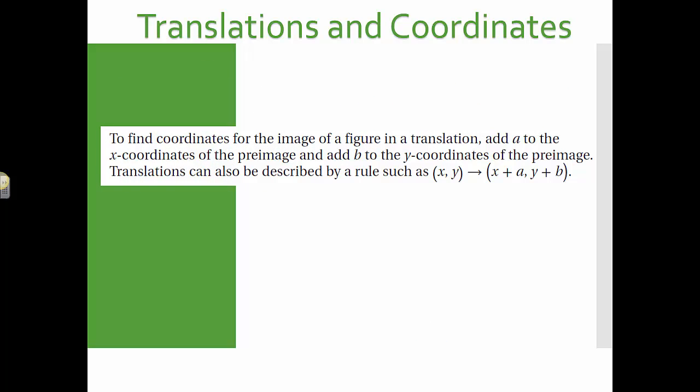The last thing we're going to do is translations in the coordinate plane. And we're going to use what we call a rule to do that. To find coordinates of an image of a figure in a translation, add A to the X coordinates of the image and add B to the Y coordinates of the image. And this will move all of the points in the same direction, the same distance. So a translation can be described as a rule like this: you take all of your points (X, Y) that create your pre-image, and all of those move to taking the X coordinates and adding A and taking the Y coordinates and adding B, where A and B just represent numbers.